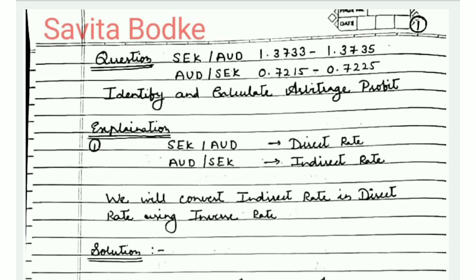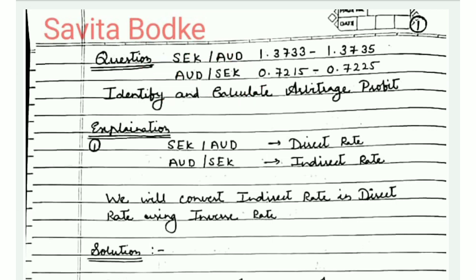The instructions say: identify and calculate the arbitrage profit. We already know that arbitrage profit is the difference between your buying price and selling price. The thumb rule is to buy at the lowest rate and sell at the highest rate. Since we have one direct rate and one indirect rate, we will first convert the indirect rate into a direct rate and then proceed with the arbitrage profit calculation.